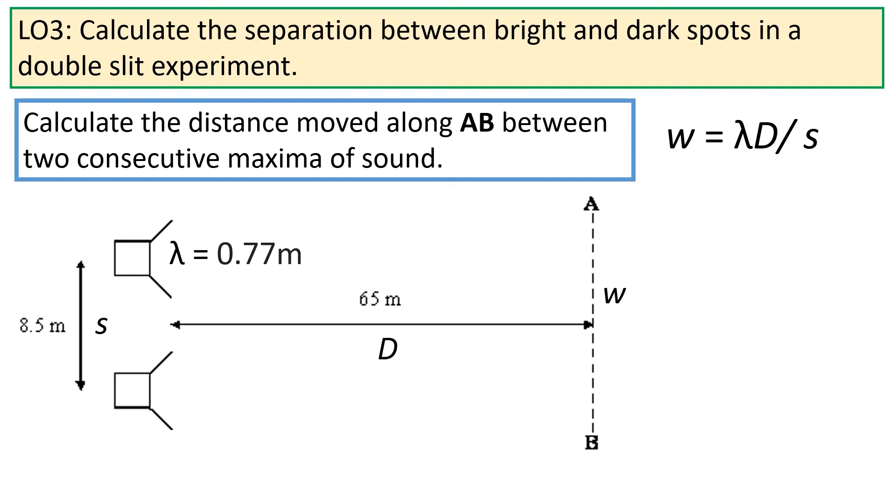Answering this question is in fact very simple. All we need to do is calculate the quantity w. In order to do this, we just need to put our numbers into the equation, where the wavelength λ is 0.77 metres, D is 65 metres, and s is equal to 8.5 metres. Putting these into the equation, we get that w is equal to 5.9 metres.